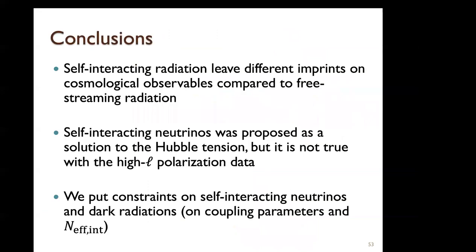In conclusion: self-interacting radiation leaves different imprints on cosmological observables compared to free-streaming radiation. Self-interacting neutrinos were proposed as a solution to the Hubble tension, but this is not supported with high-L polarization data. Instead, we put constraints on self-interacting neutrinos and dark radiations — especially on the coupling parameter and N_eff,int. Thank you very much.